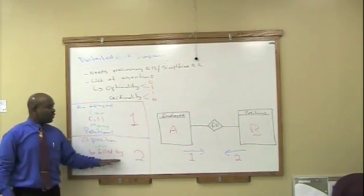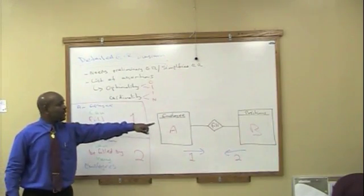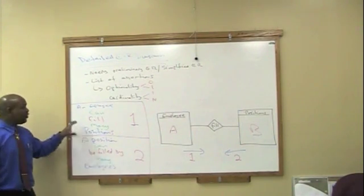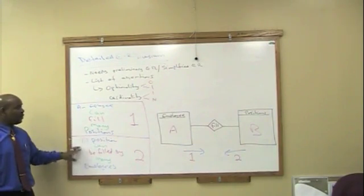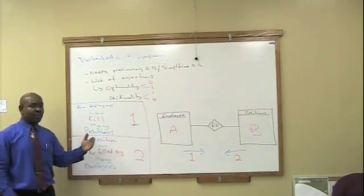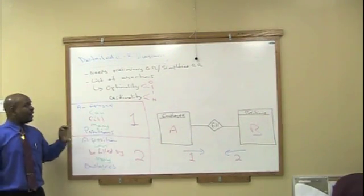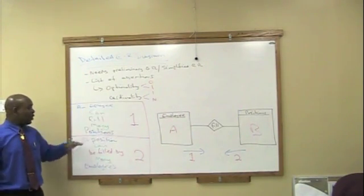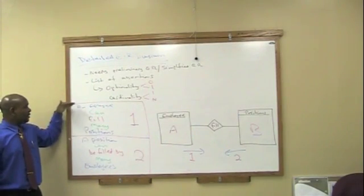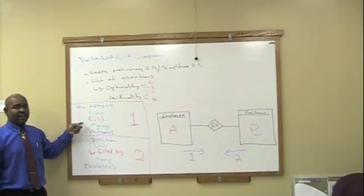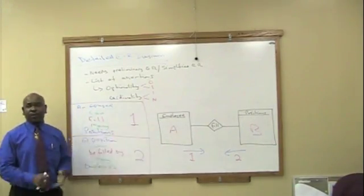Now, to move from the assertion and the preliminary ER diagram to the detailed ER diagram, all you're really doing is you're documenting these assertions, these two assertions, on the diagram. Or should I say you're documenting all of the assertions in your database on the diagram. And how we do that is by indicating optionality and the cardinality. We already have the entity and the relationship. The only thing we do not have on the diagram is the optionality and the cardinality. And those are the two things that we're going to put on the diagram.